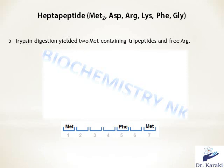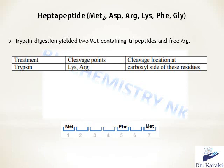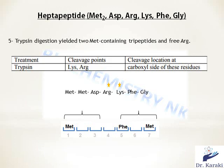Next, the heptapeptide is subjected to trypsin digestion, yielding two methionine-containing tripeptides and a free arginine. Trypsin is an endopeptidase that cleaves the peptide bond on the carboxyl end of the positively charged amino acids lysine and arginine, provided the next amino acid is not proline. Since the heptapeptide contains both arginine and lysine, cutting after them must yield two tripeptides of three amino acids, each containing methionine. The cleavage sites must therefore be after lysine and after arginine.